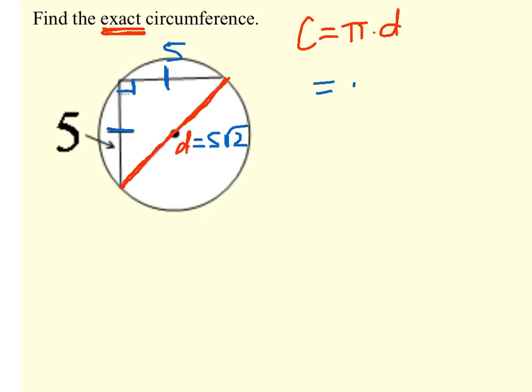I now can plug that in, pi times 5 root 2. And because it wanted the exact circumference, what you're going to do and how you're going to write your answer is 5 pi root 2. And that would be considered the exact answer.